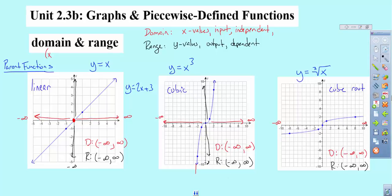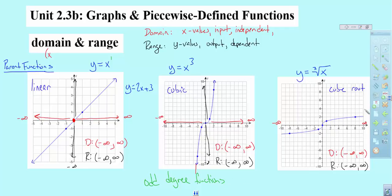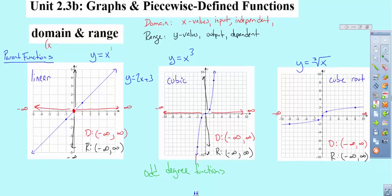Now pay attention here: y equals x is first degree, y equals x cubed is third degree, and the cube root is also a third root — those are all odds. Odd degree functions will have a domain and range that are all real numbers. So when you come across an odd degree function, you can guarantee that your domain and range will both be all reals.